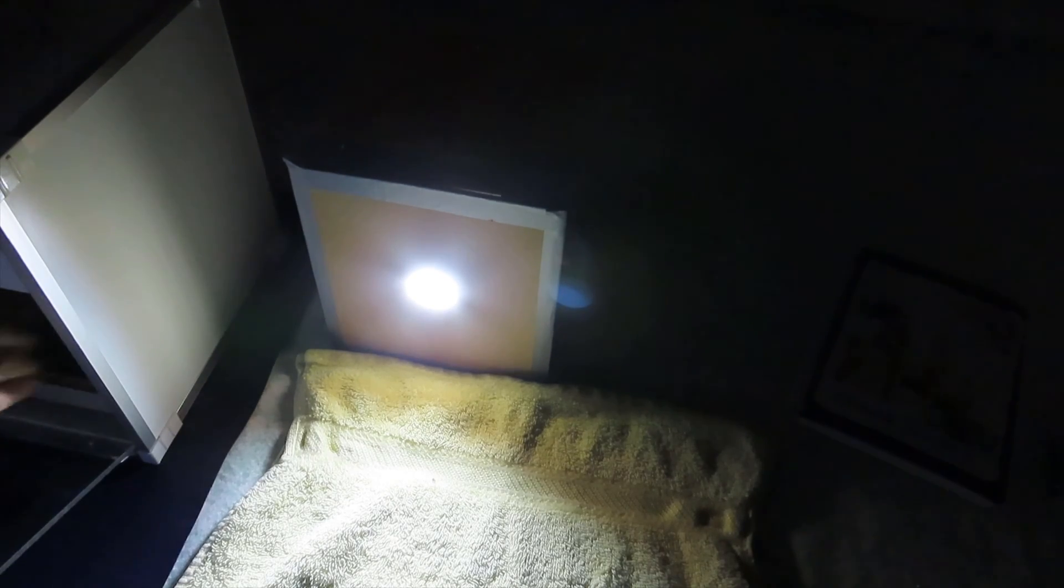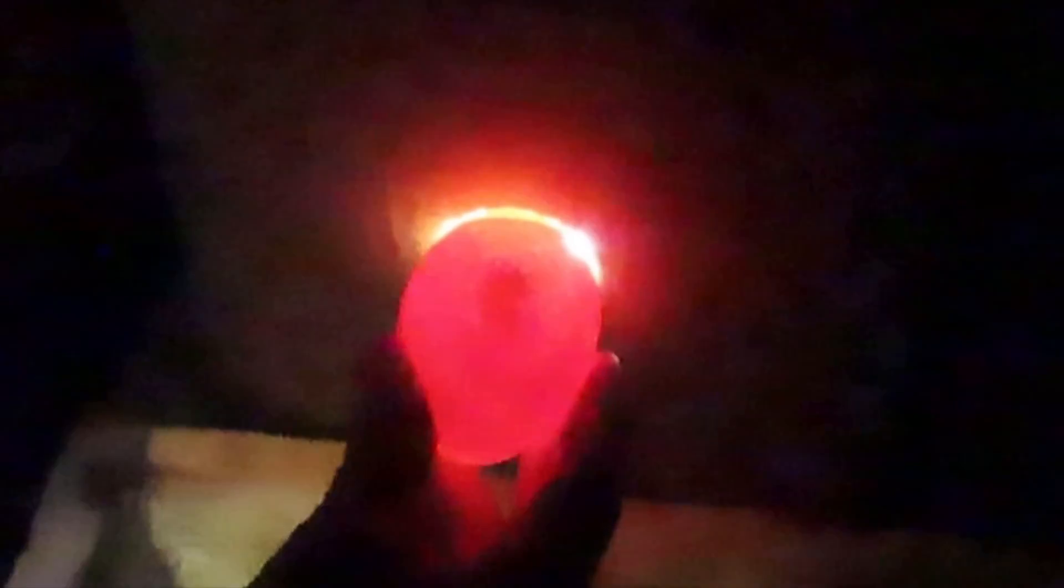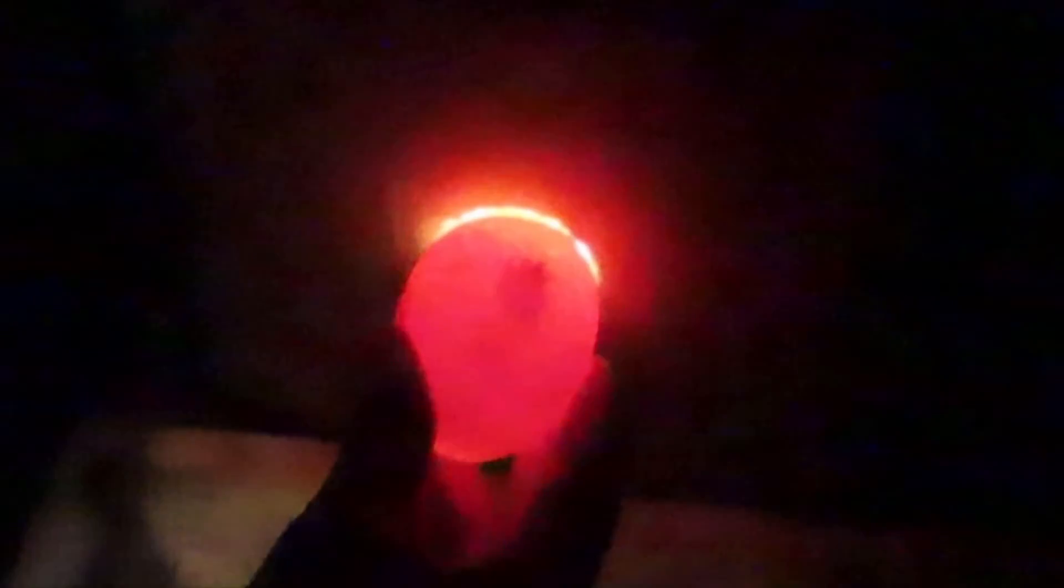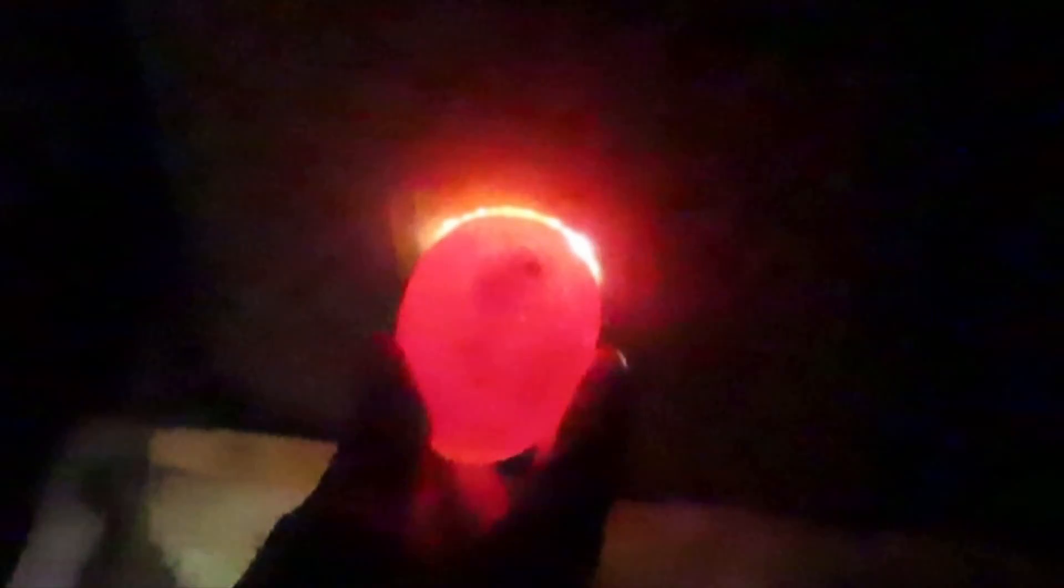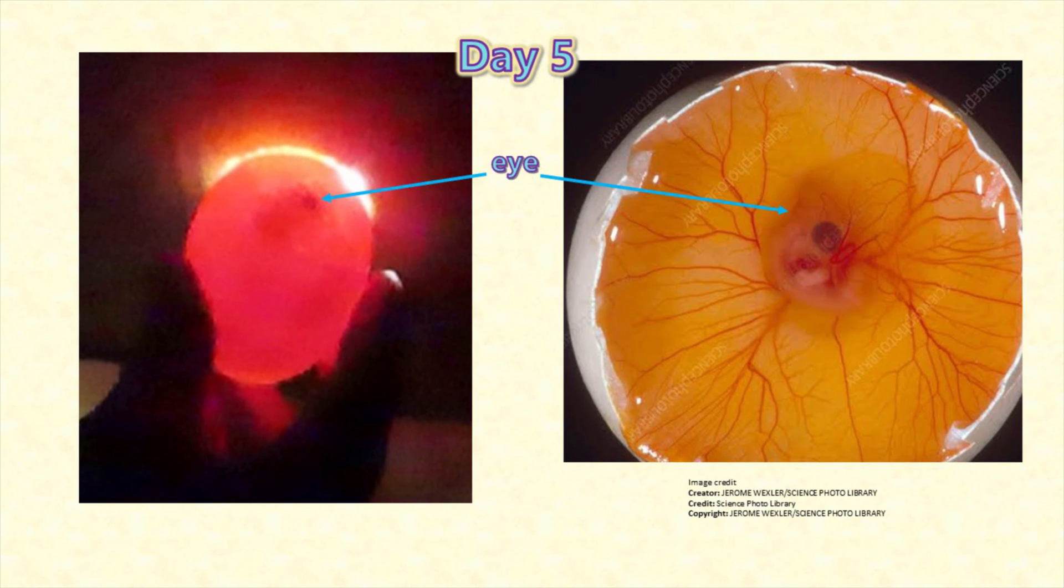As the embryo grows you can see its development by candling. This is not strictly necessary but I find one of the great pleasures of incubating eggs is watching that baby embryo grow and develop. These eggs are brown eggs and the darker the shell the harder it is to see much, but it helps if you know what you're looking for. By day 5 what you can mostly see is actually the eye of the baby chick and some tiny spiderweb-like veins.